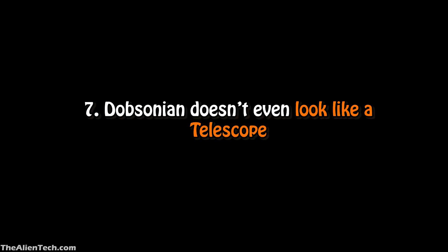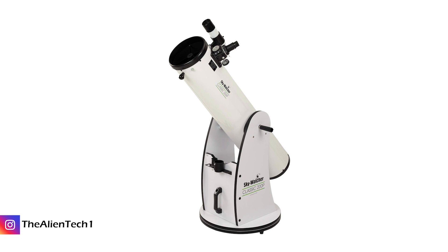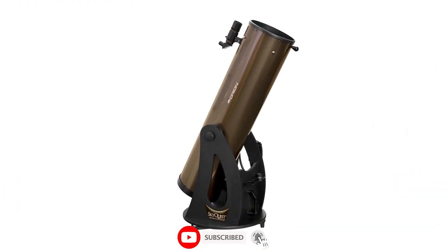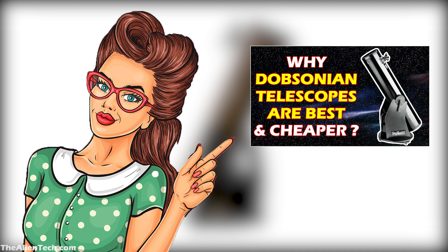Myth number seven: The Dobsonian telescope doesn't even look like a telescope so it may not be good. It is true that the Dobsonian telescope doesn't look like a conventional telescope. But Dobsonian telescopes are one of the most value-for-money telescopes. And if you are a beginner who is on a tight budget, Dobsonian telescopes will provide you with everything on a smaller budget. The shape of the telescope will not affect the results you see with that telescope. You should watch this video to learn everything about Dobsonian telescopes.